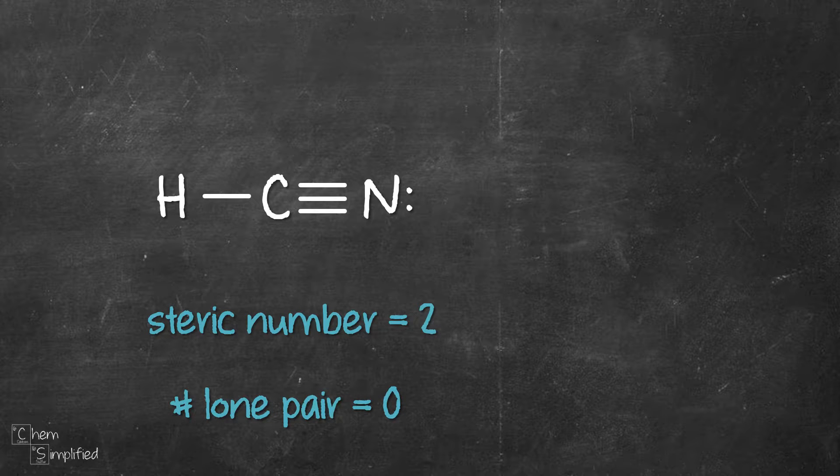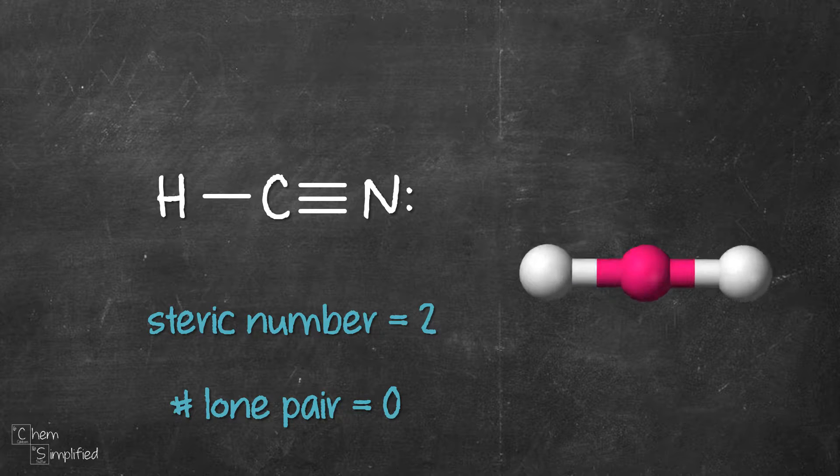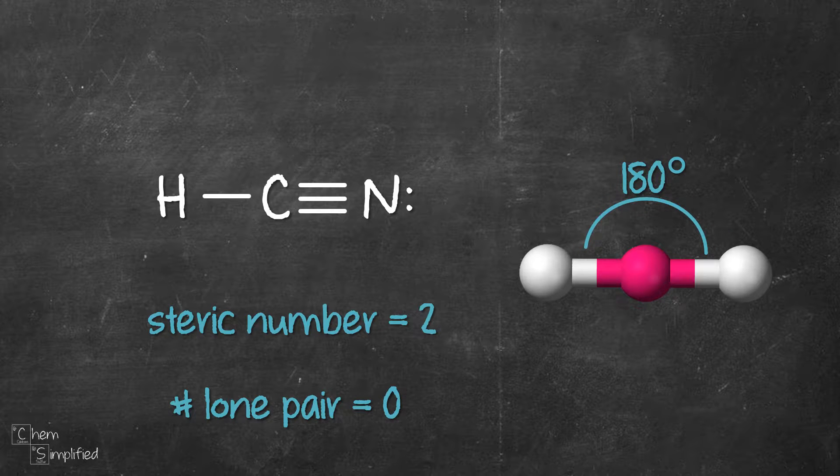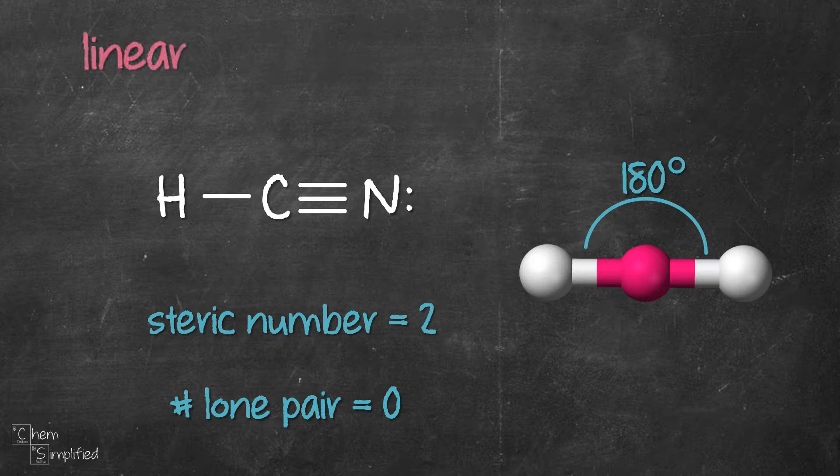Now these two groups of electrons surrounding our central atom will want to be as far apart as they can be from each other, because electrons are negative, right? So negative and negative charges will repel each other. They're going to arrange themselves to look like this, as far apart as they can be from one another, with a bond angle of 180 degrees, and we call this shape linear.